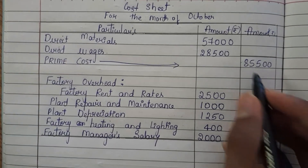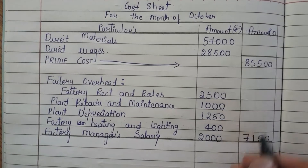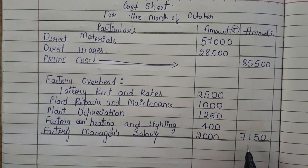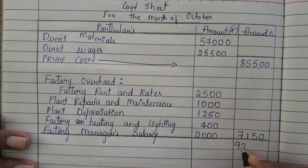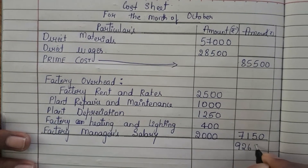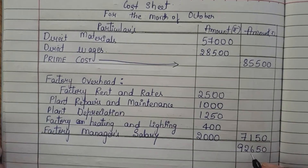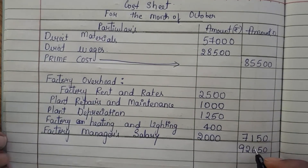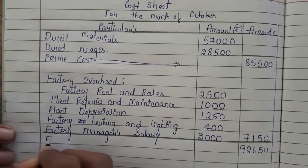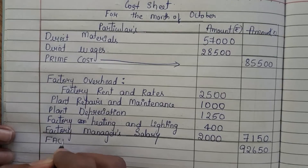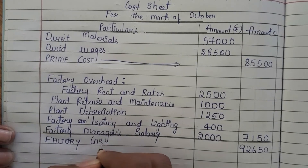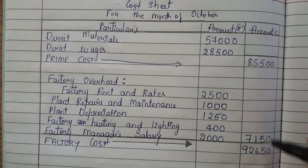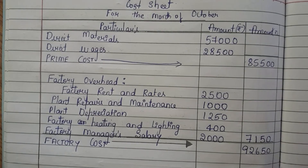Now add 85,500 and 7,150. You will get 92,650. What is this 92,650? It is nothing but our factory cost.